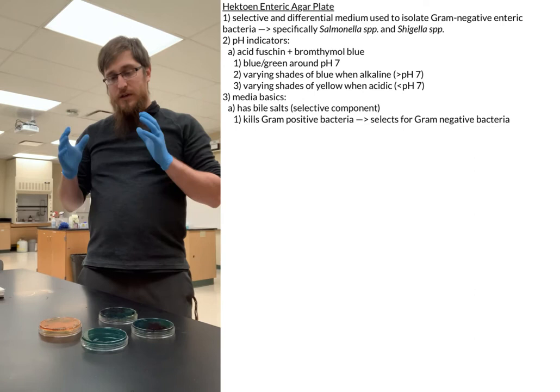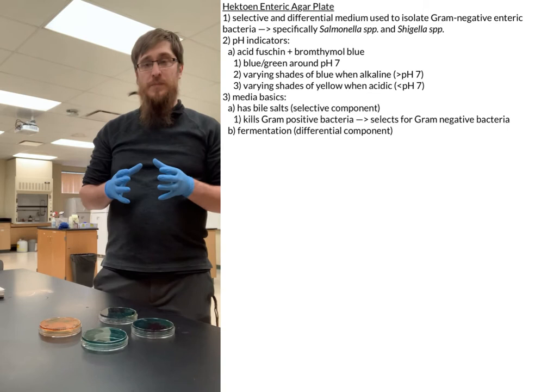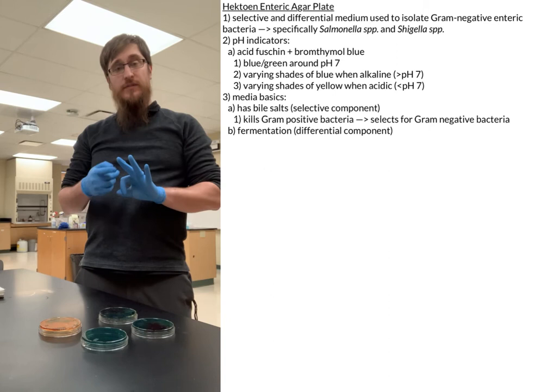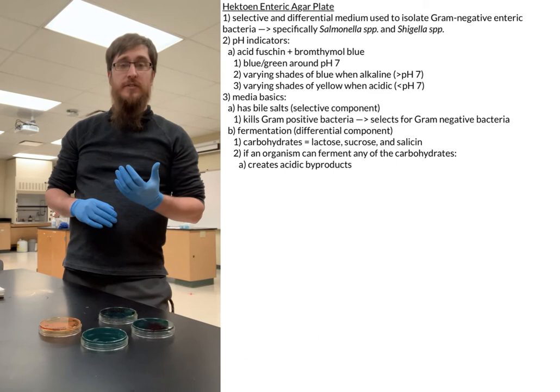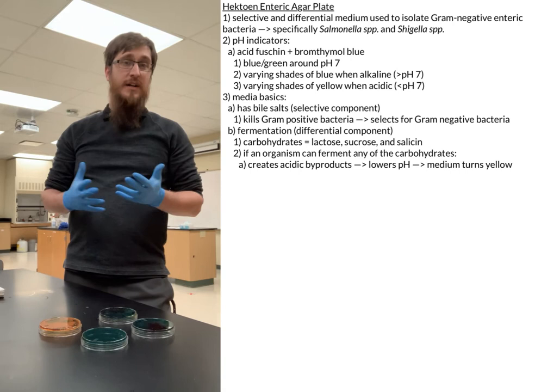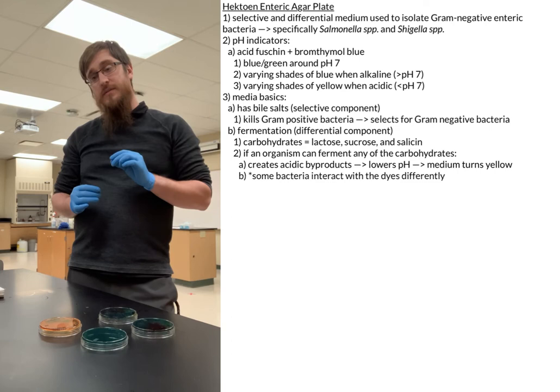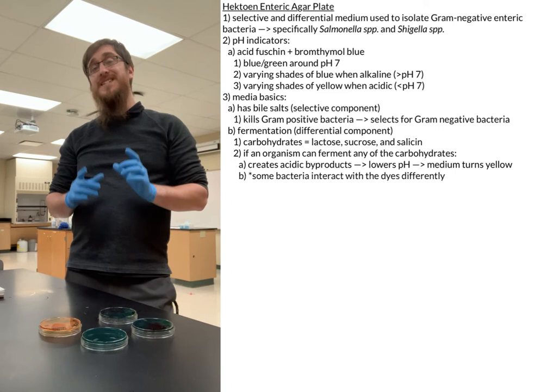In terms of the differential component, one part of it is fermentation. We actually have three types of carbohydrates in our plate: lactose, sucrose, and salicin. If an organism can ferment any one of those three carbohydrates, it's going to create acidic byproducts, which will lower the pH of the media, eventually turning it yellow. A side note: some bacteria will interact with our dyes slightly differently and give you more of a salmon color or almost a purple color instead.